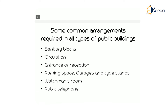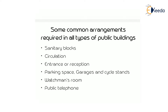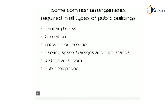There are some common arrangements required in all types of public buildings: first, sanitary block; second, circulation; third, entrance or reception; next, parking space, garage, and cycle stand space; and finally, watchman's room and public telephone. Those are the common arrangements required in a public building.